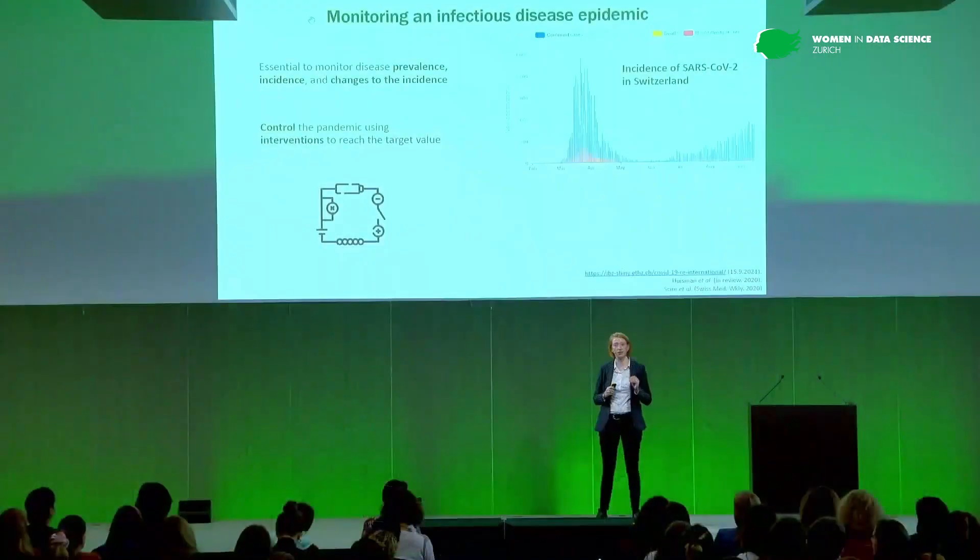The first is disease prevalence — the people currently infected with the disease, as a cumulative measure until they've recovered. Then there's incidence — the people newly infected with the disease each day. And there are changes to the incidence: is the pandemic increasing in size or rather decreasing? I like to compare this to a PID controller, where we need proportional, integral, and derivative information on the current transmission processes to control what target value we want to reach.